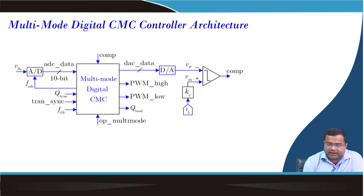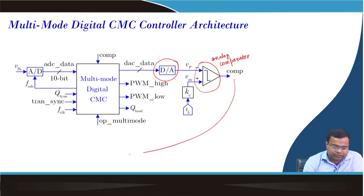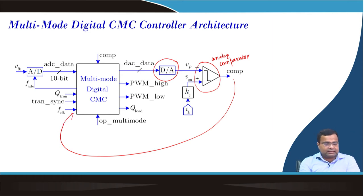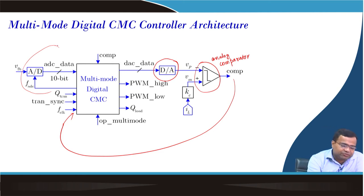Now we want to discuss that for any current-based architecture for digital implementation, we need a DAC, and the DAC will generate the current difference, and that current difference goes to the analog comparator. This comparator output is actually coming here — the comparator output is going inside this block, and there is a transient synchronization that I will discuss, and it has an ADC. We can have a pure analog kind of voltage comparator, but since we have this digital platform, we are using virtually a replicated analog comparator, and this block we have to synthesize.